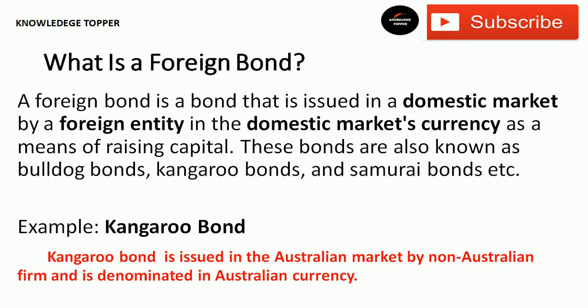Looking at this definition here: a foreign bond is a bond that is issued in a domestic market by a foreign entity, in the domestic market's currency, as a means of raising capital. These bonds are also known as bulldog bonds, kangaroo bonds, and samurai bonds, etc.